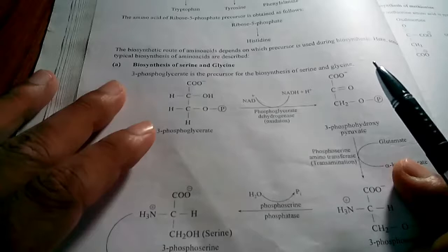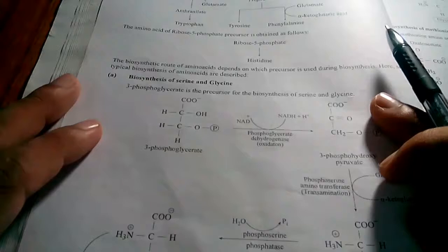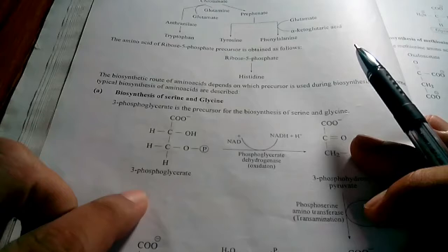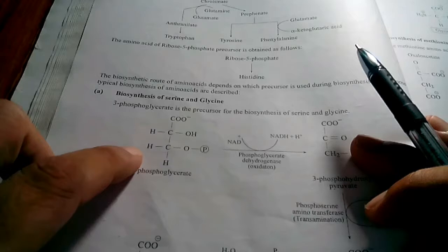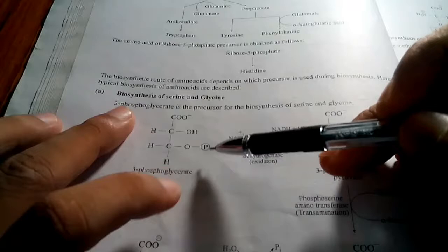3-phosphoglycerate is the precursor for the biosynthesis of serine and glycine. It is the smallest organic compound that serves as the precursor for the synthesis of both serine and glycine. The synthesis starts from 3-phosphoglycerate.